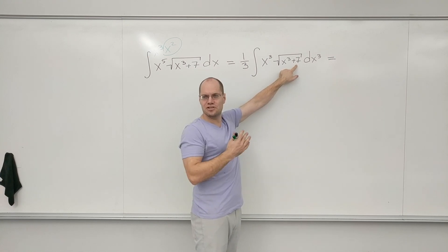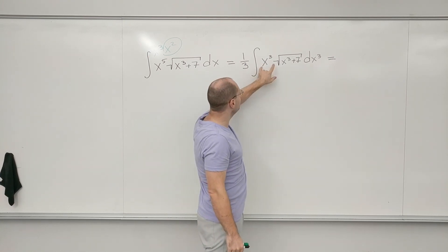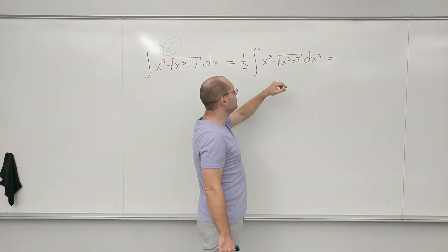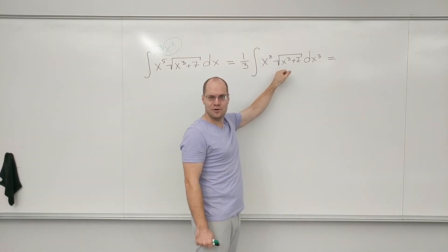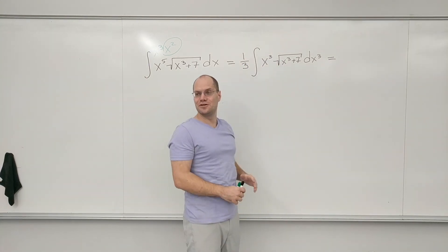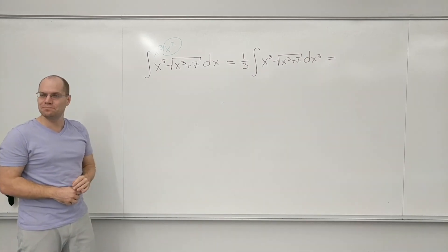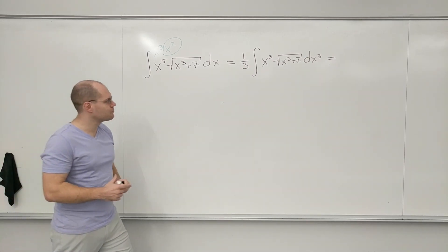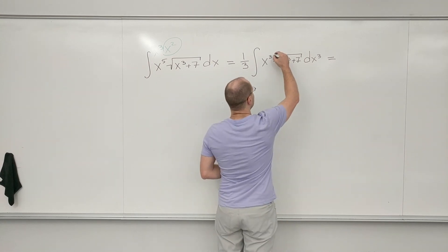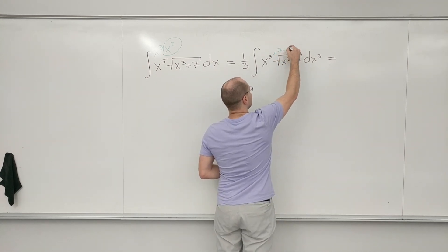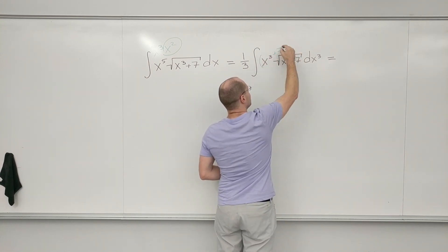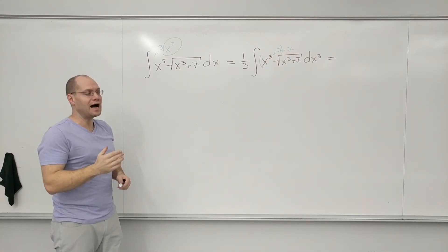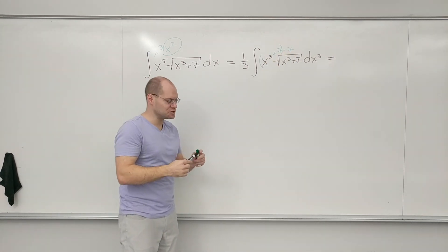If this was x^3 plus 7, then I would combine it into a single power and be golden also. But I have the something-in-between business, so I still have to do something. I have to split it into two pieces — I have to make it (x^3 + 7) and then minus 7 — just so that if I put parentheses like this, I will have a match, so to speak.